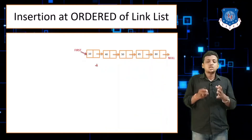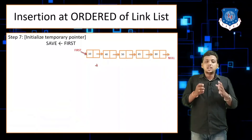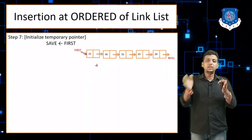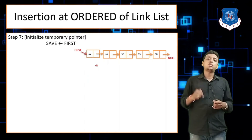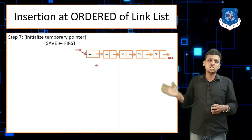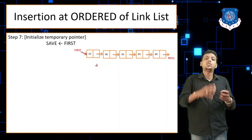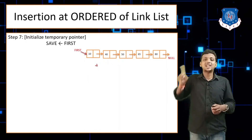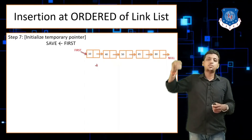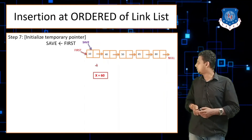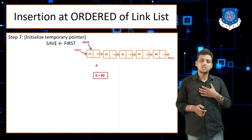Now the third and major condition: we need to insert the node between any two existing nodes. We initialize a temporary pointer called save, just like when traversing to find the last node. Save is initialized at first — the save pointer is pointing at first. The value of x we want to insert is 60.